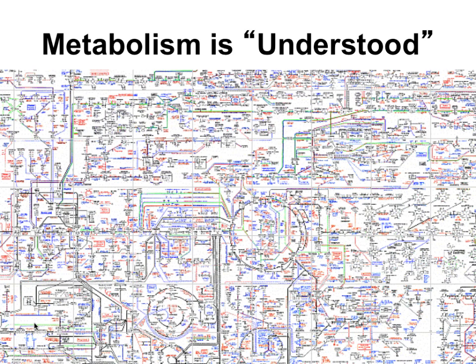We actually do understand metabolism. There's a wall chart found in old biochemistry labs describing human metabolism in exquisite detail — it's 40 years old. We've known about metabolism, all the enzymes, processes, and pathways for a long time. It's very different from the hairball network diagrams typically drawn in systems biology. Those tell me almost nothing — just that lots of things are connected. The metabolic pathway diagrams have arrows, directionality, beginnings and ends, products and reactants. That's what we should be aiming for in systems biology.